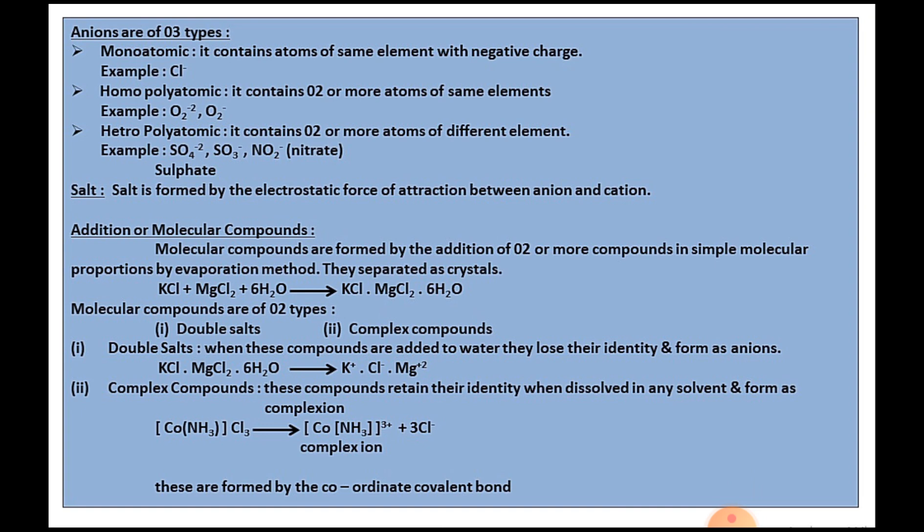Homopolyatomic anion contains two or more atoms of the same element. Example: O2 2- where oxygen is present two times. Even in O3 2- also, oxygen is present two times.